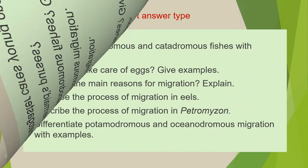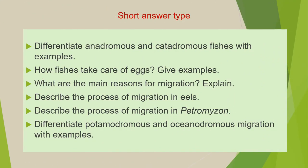The next category of questions are short answer type questions which you have to answer in a single paragraph. The first question from this category is: differentiate anadromous and catadromous fishes with examples. Second question: how do fishes take care of eggs? Give examples. Third: what are the main reasons for migration?